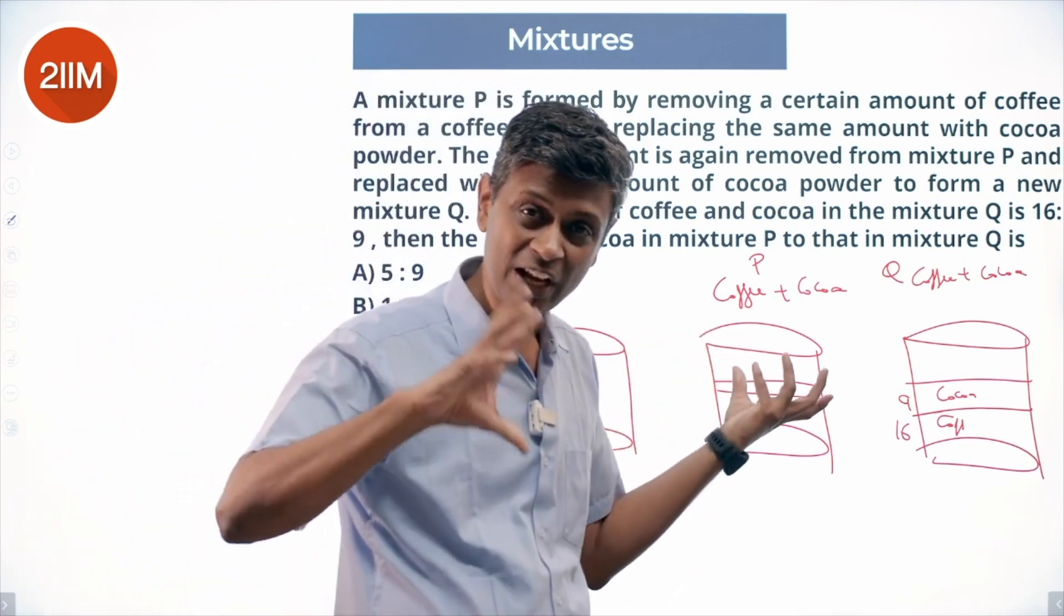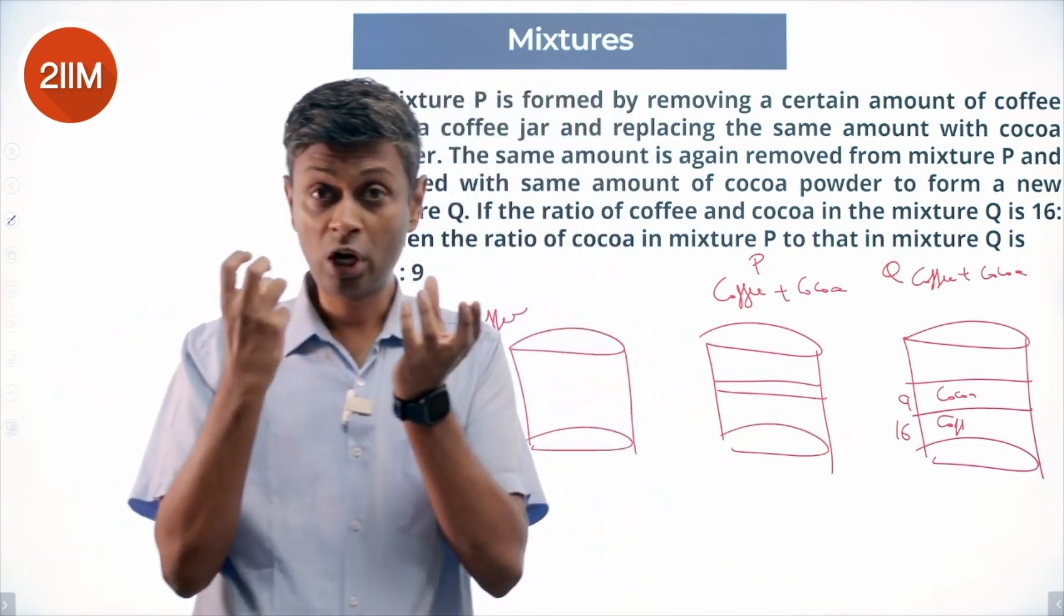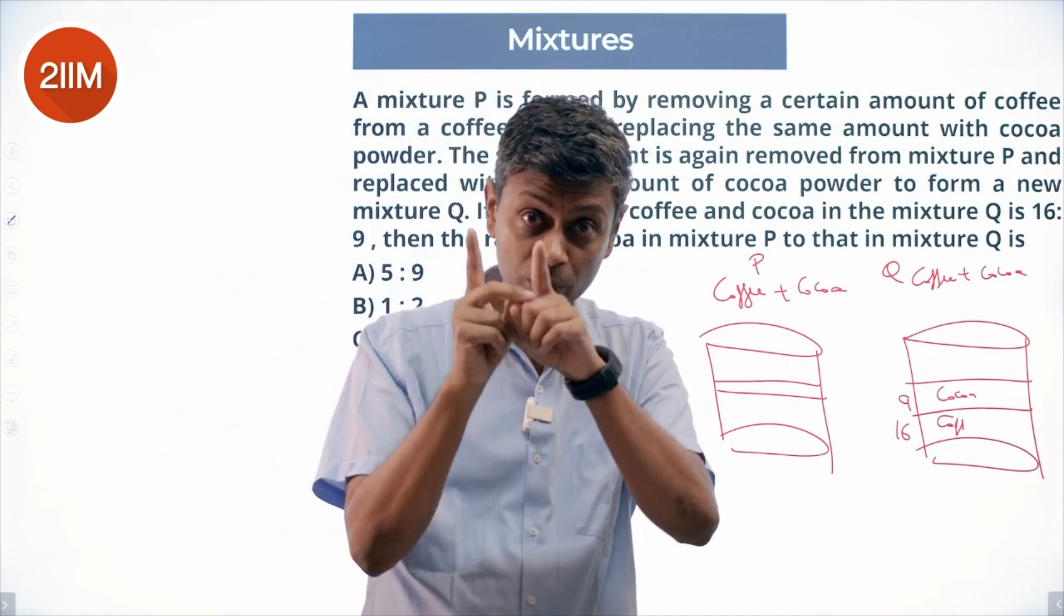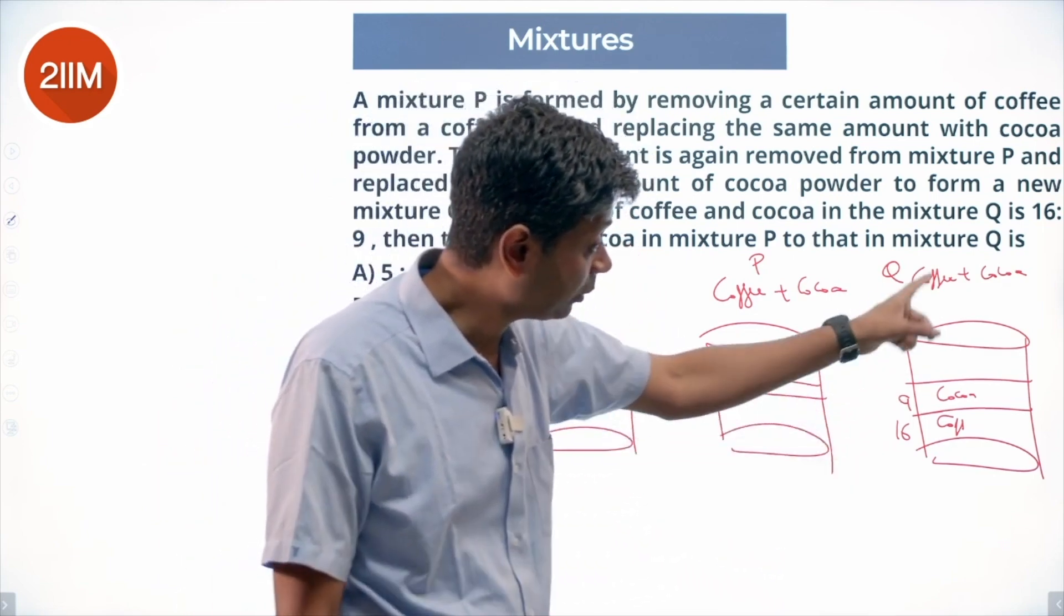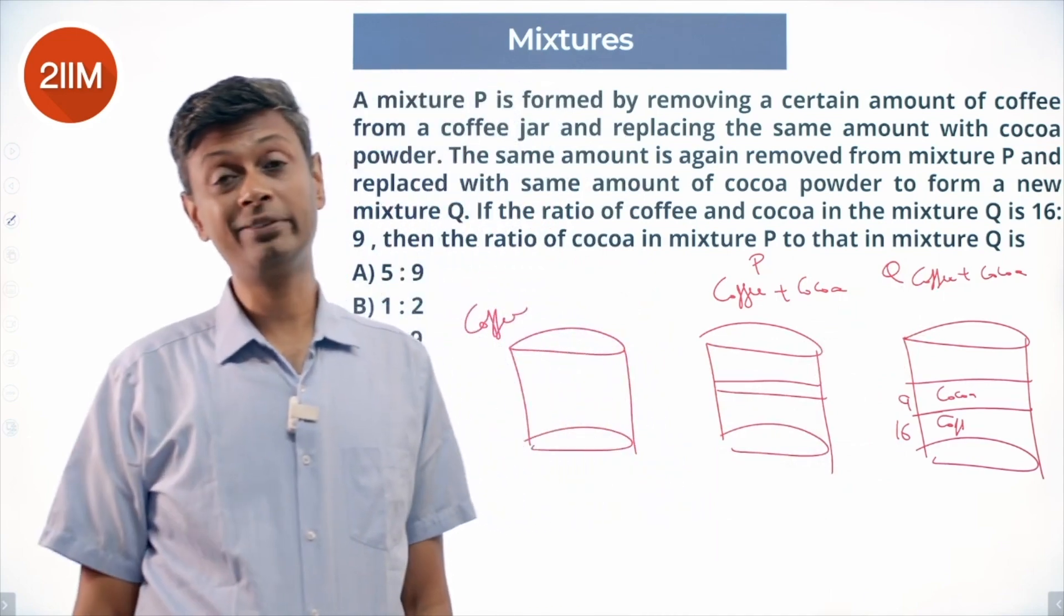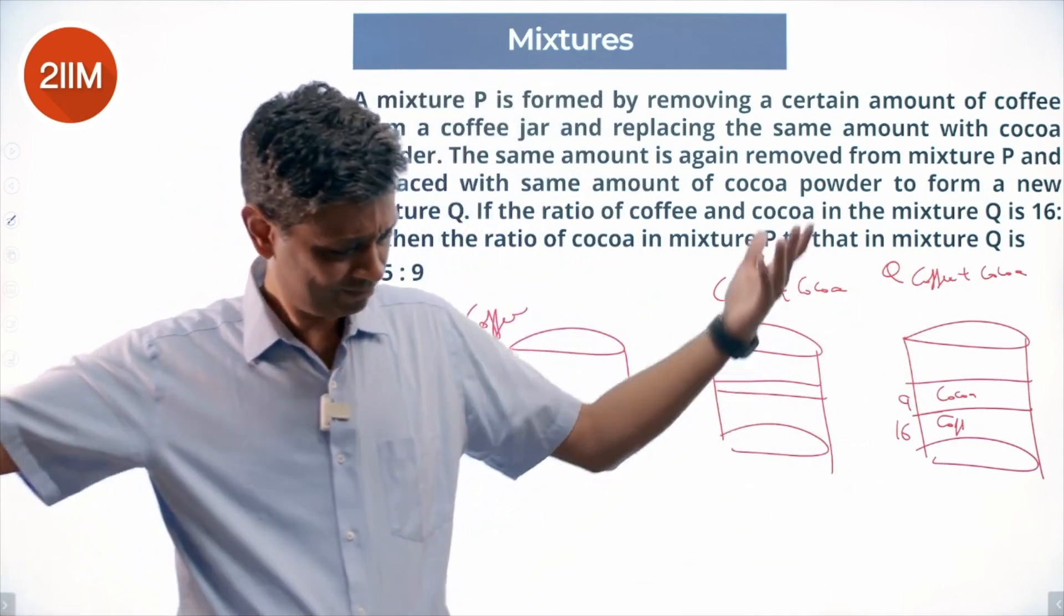From here I am taking away both coffee and cocoa, but I am replacing with cocoa. So cocoa is being removed and cocoa is being added, but coffee is only removed. So I am going to track coffee. Coffee is 16/25 of original - 16/25 is a very nice number, there is (4/5) whole square. I am done.